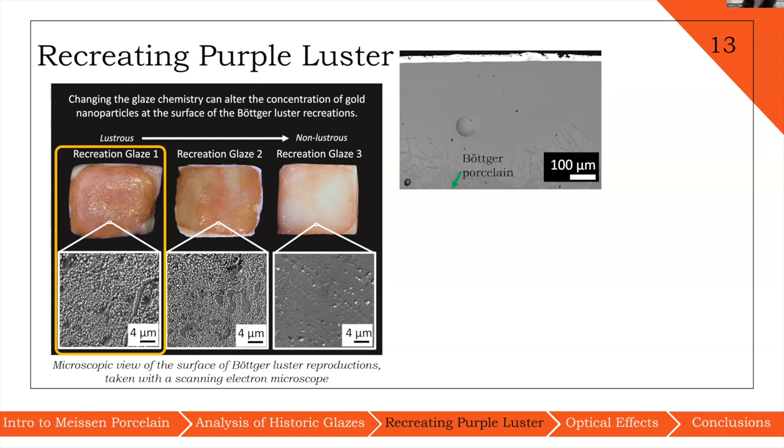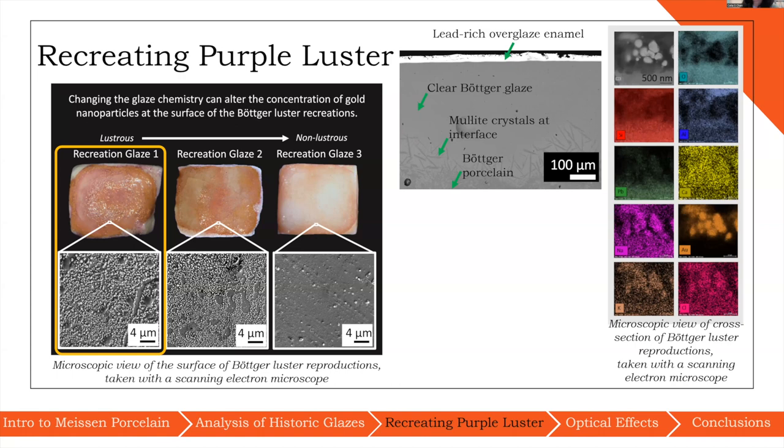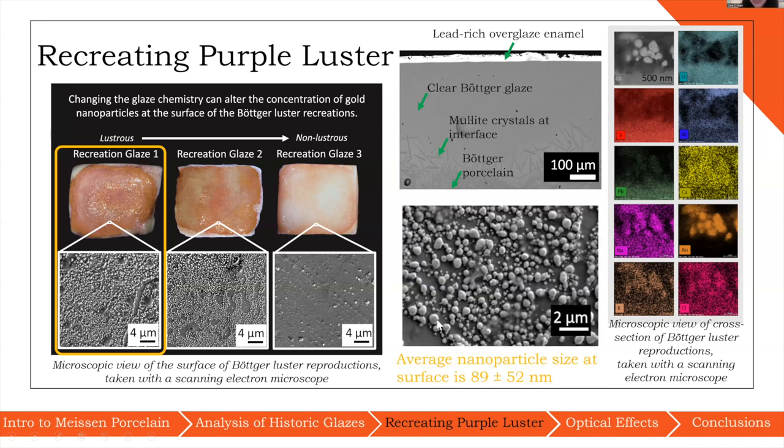Just as an overview, our samples consisted of a porcelain body, a clear glaze, and between the interface of these two, we can observe mullite crystals coming out into the glaze. On top of the clear glaze is where we have the lead-rich overglaze enamel. Zooming into that region using energy dispersive x-ray spectroscopy, we can identify that the gold spheres that we see at the top of that overglaze enamel in our recreation are also gold. From a surface perspective, we can also see this variation in particle size where we have larger nanoparticles mixed with smaller ones, which also links the application method of lusterware to the optical properties and to the structure of the nanoparticle array.